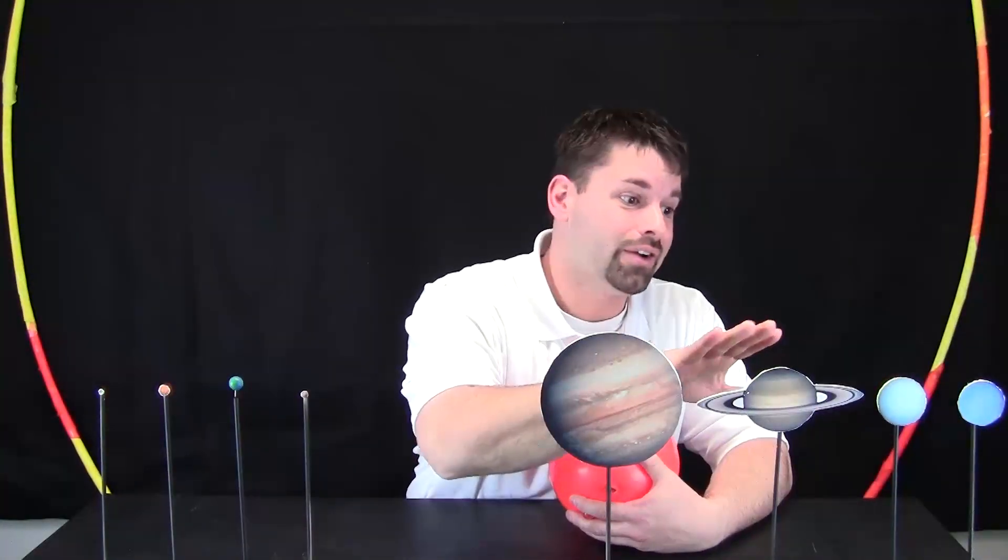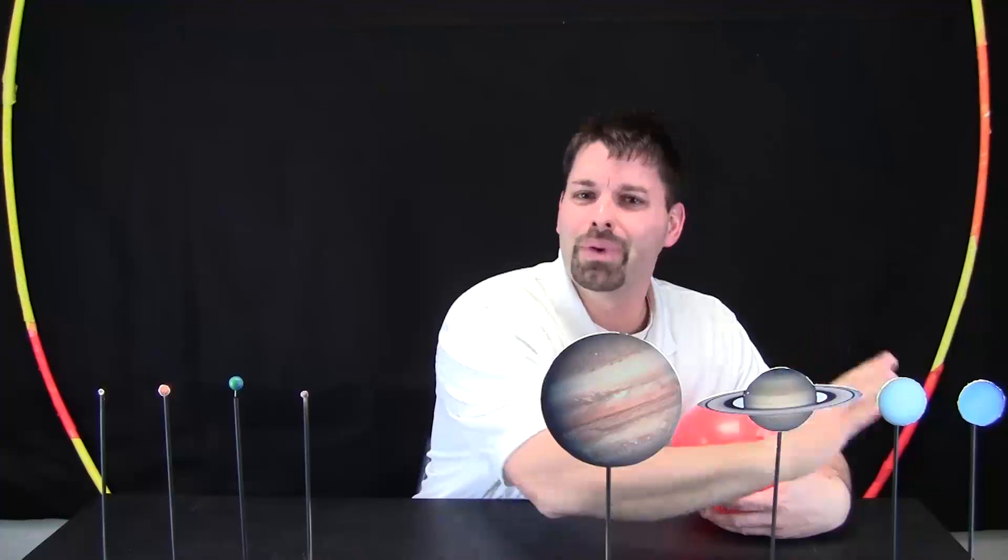We have Jupiter, Saturn, Uranus and Neptune. Look at all the planets and compare their sizes. But I am forgetting something.